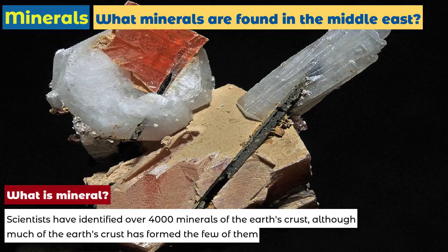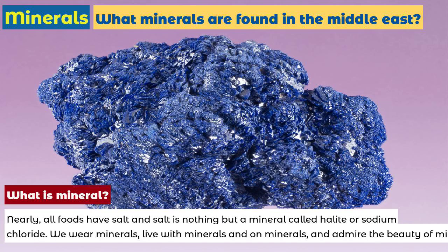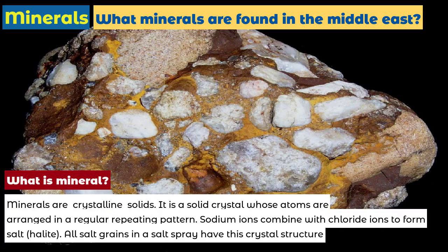What is a mineral? Scientists have identified over 4,000 minerals in the Earth's crust, although much of the Earth's crust is formed from only a few of them. Nearly all foods have salt, and salt is nothing but a mineral called halite, or sodium chloride. We wear minerals, live with minerals and on minerals, and admire the beauty of minerals. Minerals are crystalline solids — a solid crystal whose atoms are arranged in a regular repeating pattern. Sodium ions combine with chloride ions to form salt, halite. All salt grains have this crystal structure.